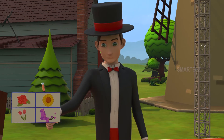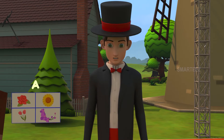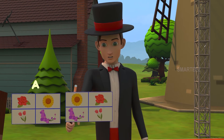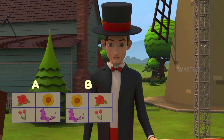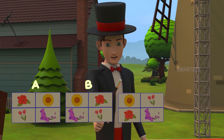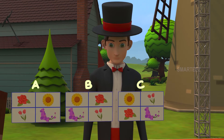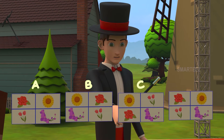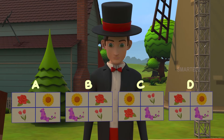Look at this picture. This is the first one. Let's call it A. Look at this picture closely as well. Let's call this picture as B. Look at this picture closely as well. Let's call this picture as C. Look at this picture closely as well. Let's call this picture as D.